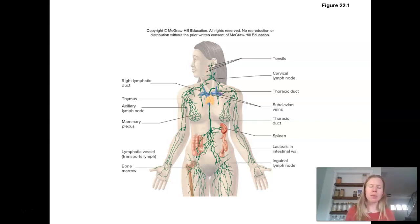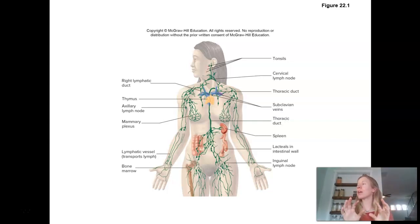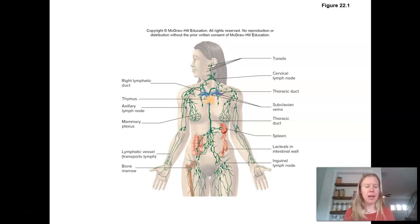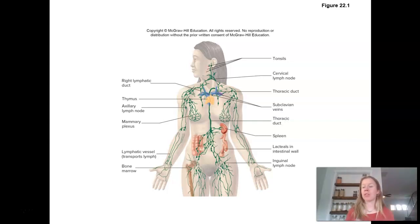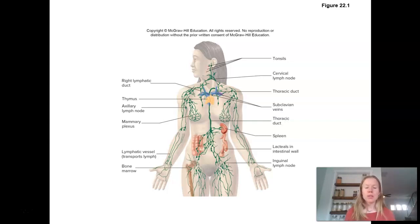The big difference between a lymphatic tissue and an organ is that the organ is actually going to have a capsule around it, where the tissue is more diffuse — often embedded in the walls of other organs. Tonsils are an example of more diffuse lymphatic tissue, while the spleen and thymus are lymphatic organs. These organs produce and store lymphocytes.